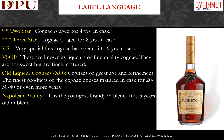Label language of cognac: 2-star cognac is aged for 4 years in cask. 3-star is aged for 8 years. VS (Very Special) spends 5-9 years in cask. VSOP (Very Superior Old Pale) cognacs are known as liqueurs or fine quality cognac — they are not sweet but are finely matured. XO cognacs are of great age and refinement, the finest products of the cognac houses, matured for 20, 30, 40 or even more years. Napoleon Brandy is the youngest brandy in the blend, 3 years old.